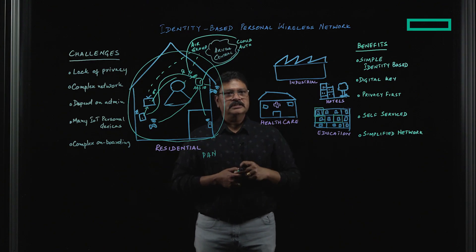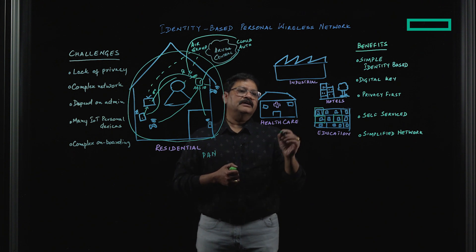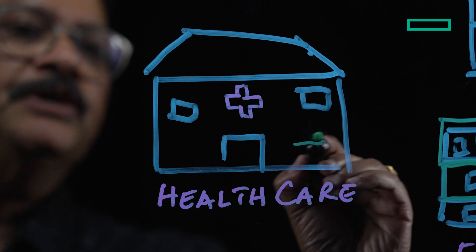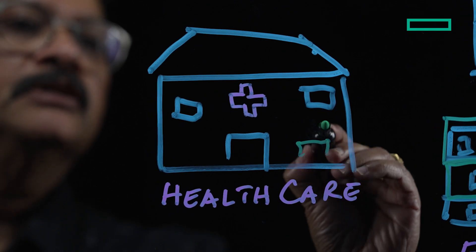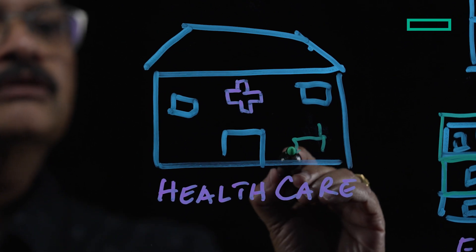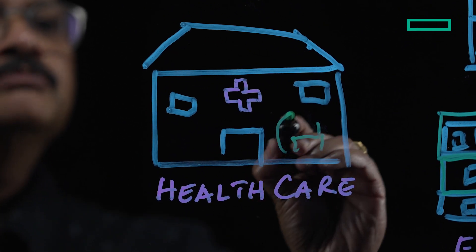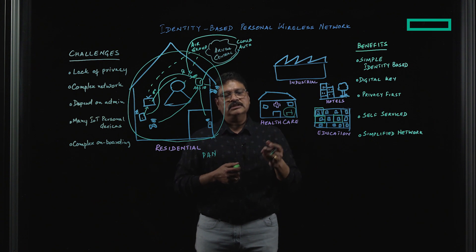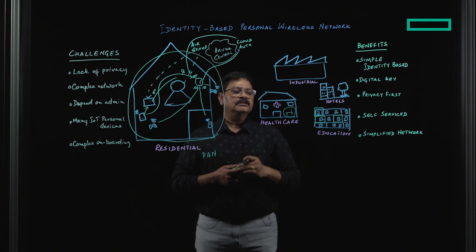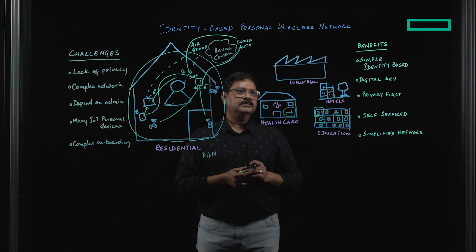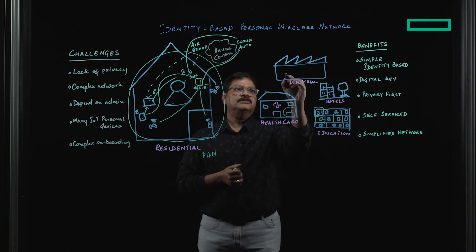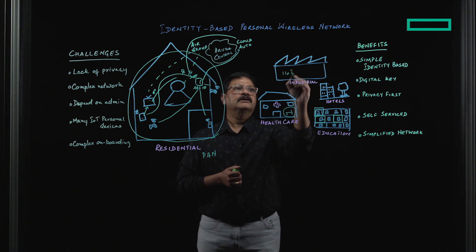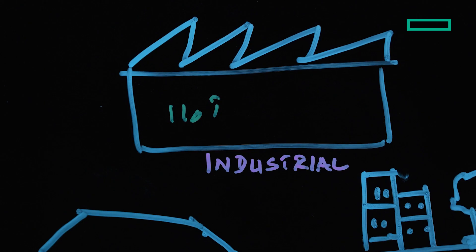The same thing can be done for healthcare. For example, in patient care, only the people who are in that location — whether a doctor, nurse, infrastructure person, or whoever the case may be — should be able to access the devices there. All those things can be extended here as well. Same thing for an IIoT environment where you want to specifically restrict access to that area.